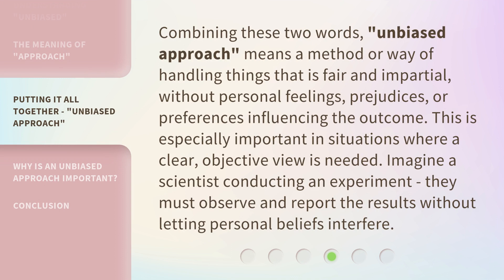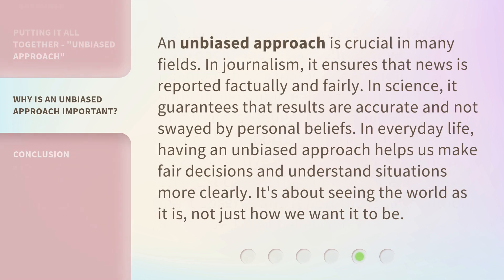Combining these two words, Unbiased Approach means a method or way of handling things that is fair and impartial, without personal feelings, prejudices, or preferences influencing the outcome. This is especially important in situations where a clear, objective view is needed. Imagine a scientist conducting an experiment — they must observe and report the results without letting personal beliefs interfere. An Unbiased Approach is crucial in many fields: in journalism, it ensures that news is reported factually and fairly; in science, it guarantees that results are accurate and not swayed by personal beliefs; and in everyday life, having an Unbiased Approach helps us make fair decisions and understand situations more clearly. It's about seeing the world as it is, not just how we want it to be.